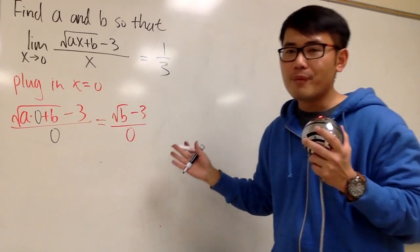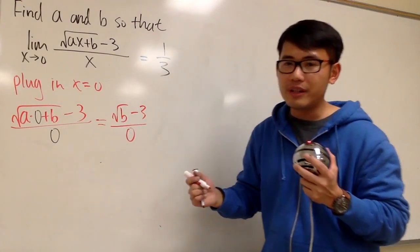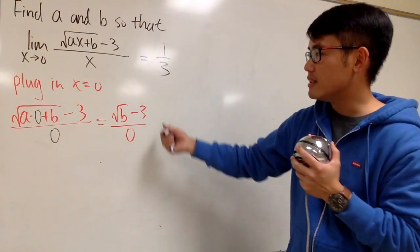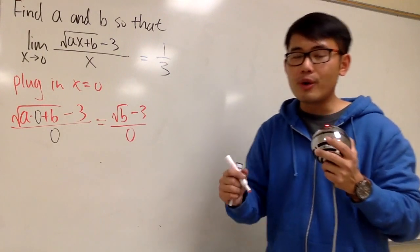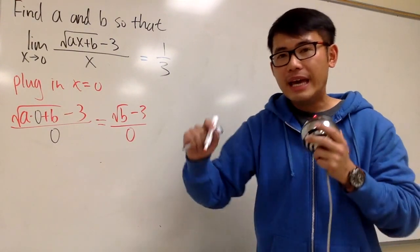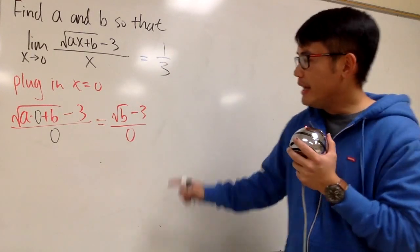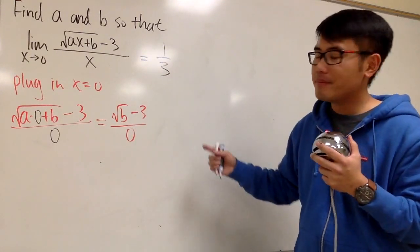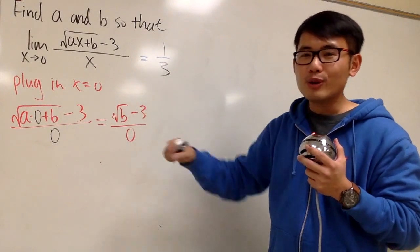And now, we have a 0 in the denominator already, and this is about doing limits, right? So, you cannot say this is undefined. Because remember, whenever we are dealing with limits, there is an indeterminate form. And in fact, that's what we have to use. In order for this to be a finite value at the end, the top also should be 0.